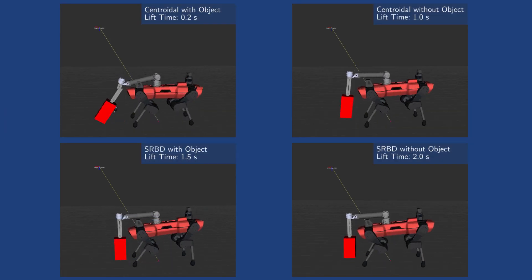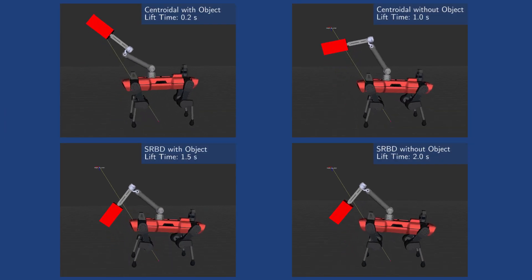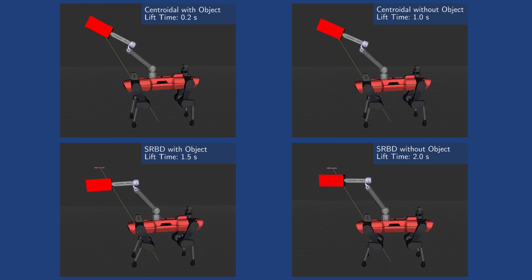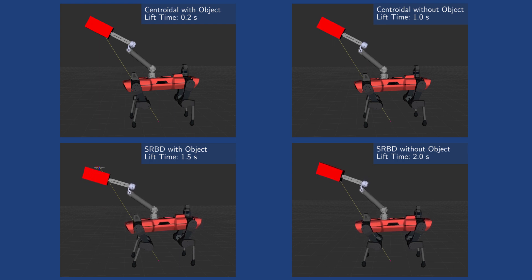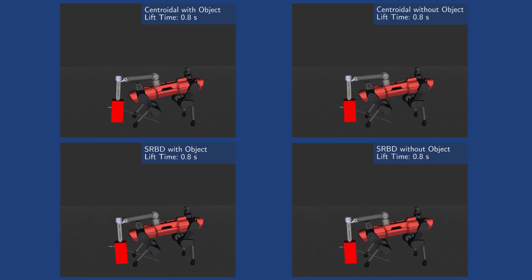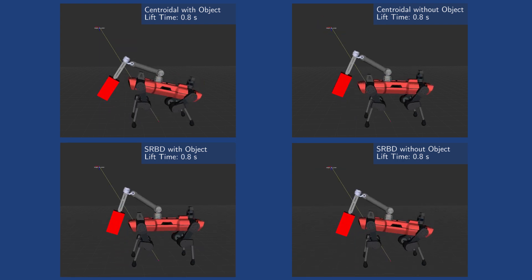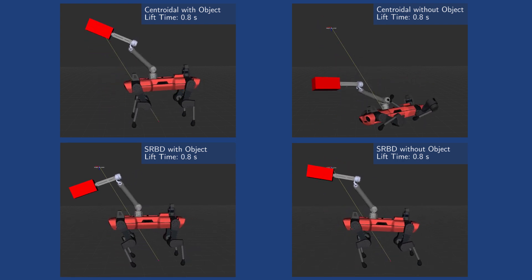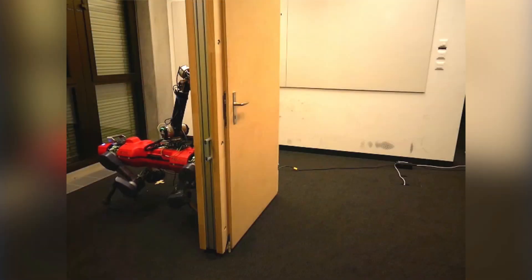Here we perform a comparative study between different template models in the MPC formulation. The comparison is done with a dynamic object lifting task. We note that including the dynamic effects of the arm and the object in the planner allows for a wider range of fast lifting motions. For example, for a lifting time of 0.8 seconds, the centroidal model augmented with the object dynamics is the only option that succeeds.